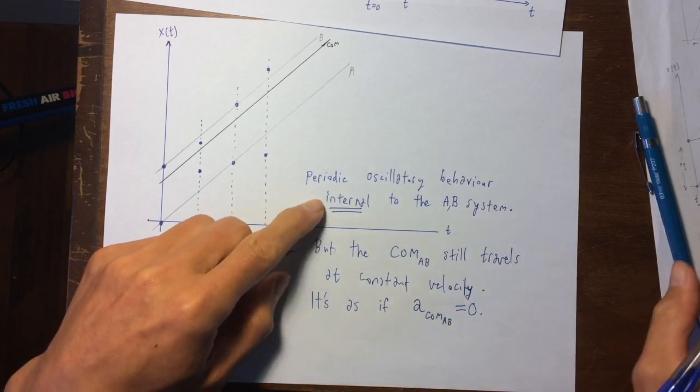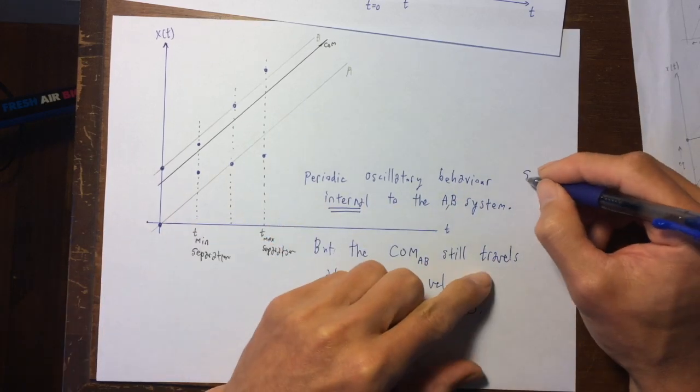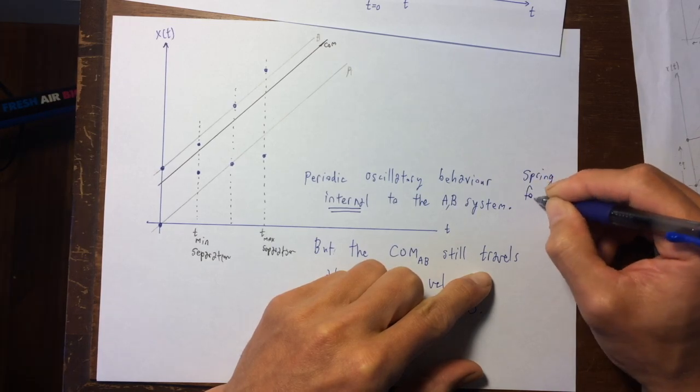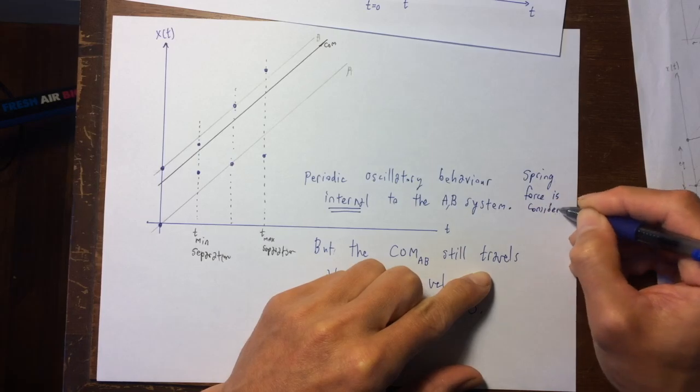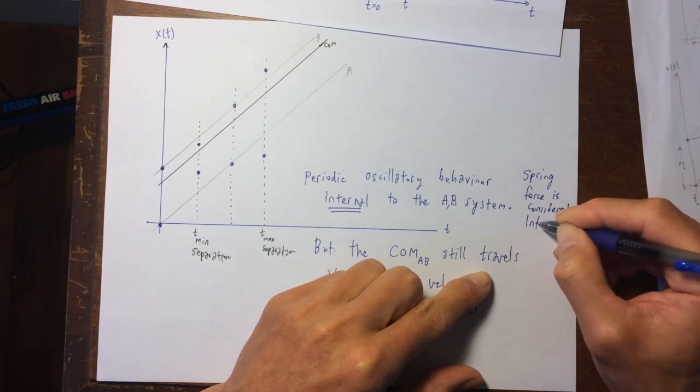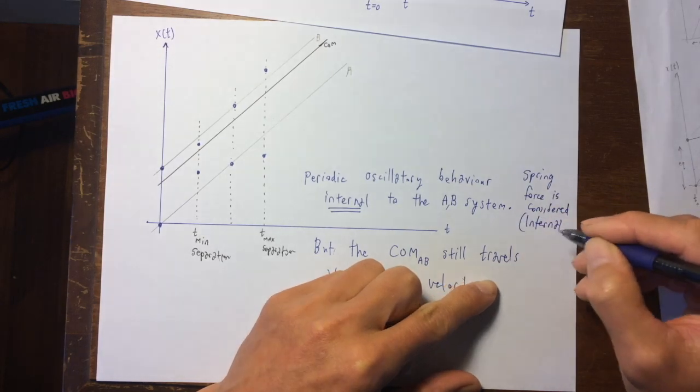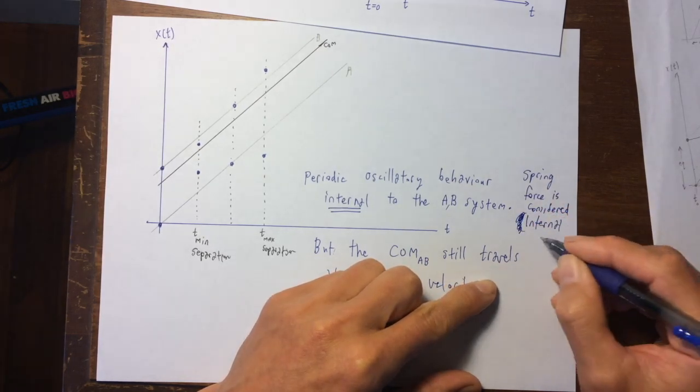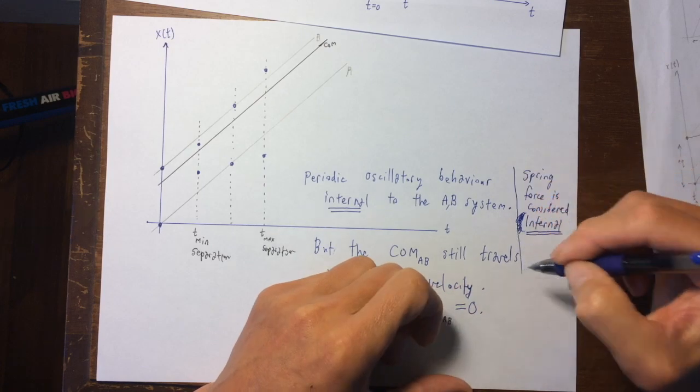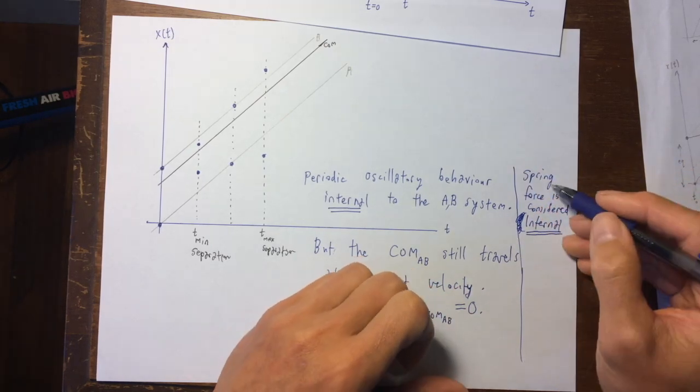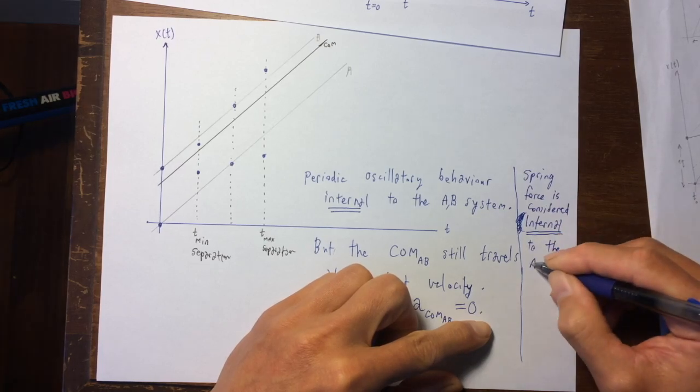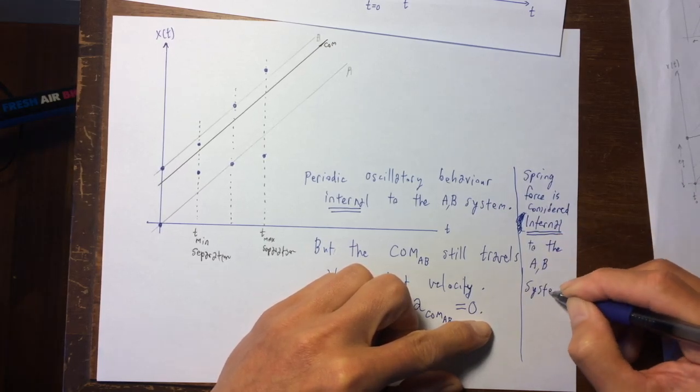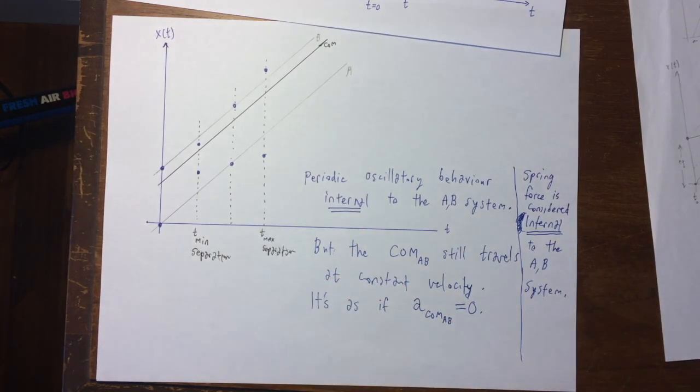But we're going to say that the spring force is considered internal, not a parenthesis for emphasis. Let's double underline it - the spring force is considered internal to the AB system.